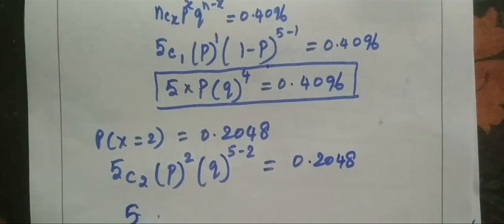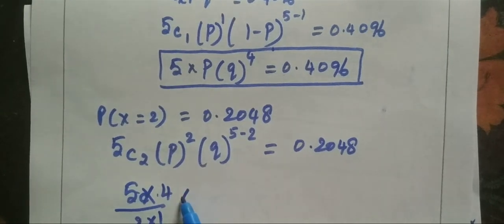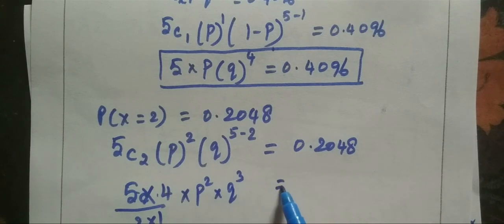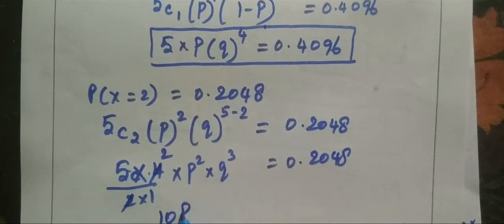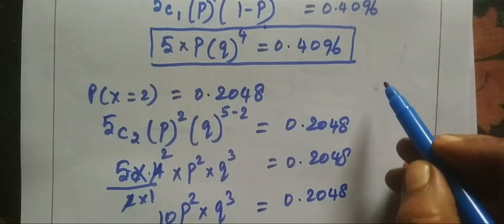So, 5C2 then 5C2 equals 5 times 4 by 2 times 1, times p squared times q cubed equals 0.2048. This cancels, 2. So, 5 times 2 is 10.